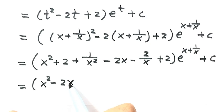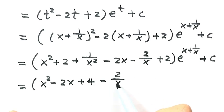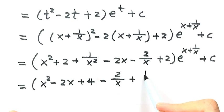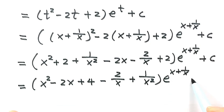Rearranging the inside terms in descending order of exponents: that is x squared, minus 2x, then 2 plus 2 less 4 gives 4, minus 2 over x, then plus 1 over x squared. Then e to the power of x plus 1 over x, then plus c. This is the answer for this integral. Thanks for watching.